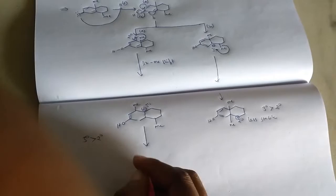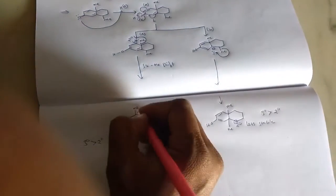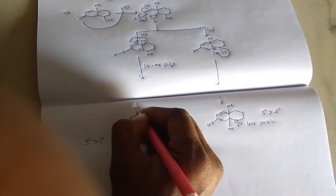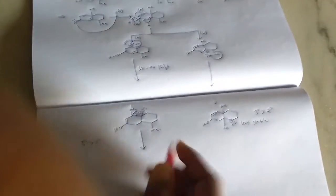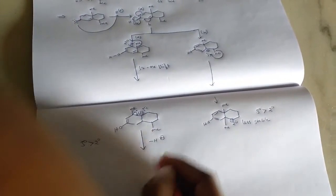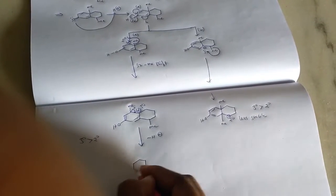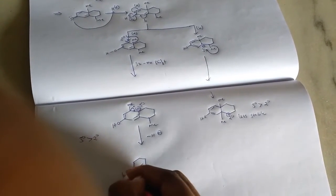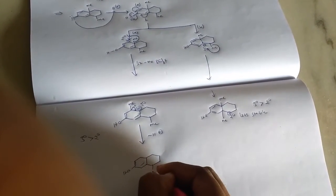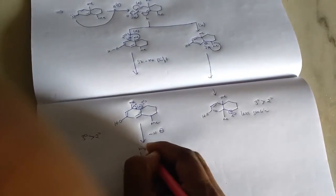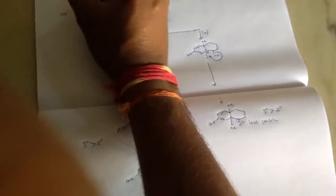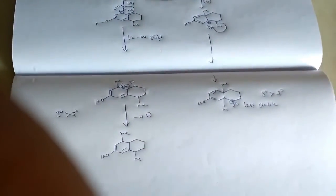Then, on further removal of H plus, we can get this is the product. So option A is correct for this question. Thank you.